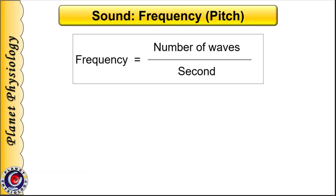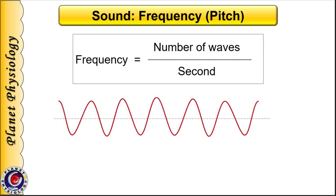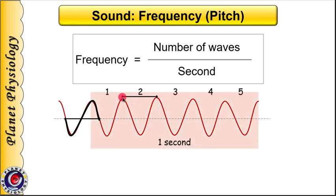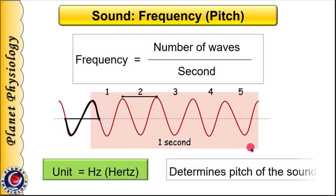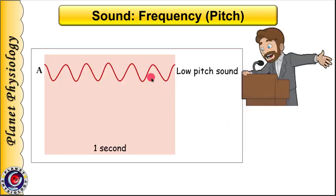Now let us begin with the second characteristic of sound — frequency. Frequency is the number of waves per second. A single wave is the distance between two successive similar points, or the distance between two successive peaks of the waveform. Such number of waves in a second is the frequency, measured in hertz. For example, a frequency of 5 hertz means five waveforms in one second. Frequency is the objective measure of pitch of the sound. If the sound frequency is less, it is a low pitch sound — like that of bass or a woofer in music, or a typical male voice.